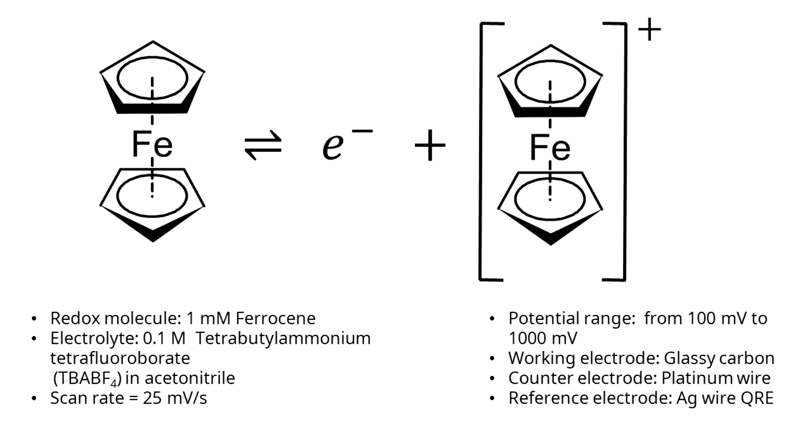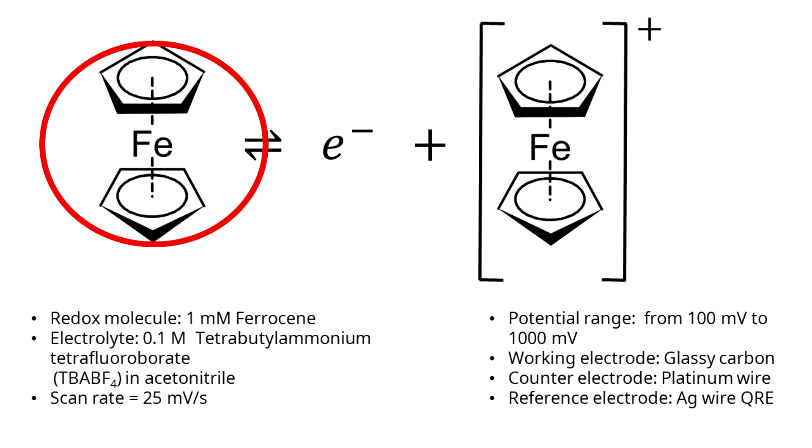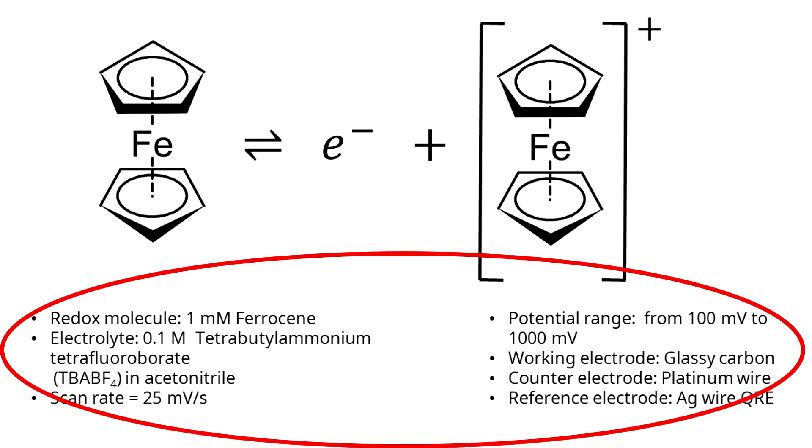Now we'll be going over the Levich equation and some rotating disk electrode data to determine the diffusion coefficient of ferrocinium which is generated from the oxidation of ferrocene in this redox reaction. The experimental parameters are below.